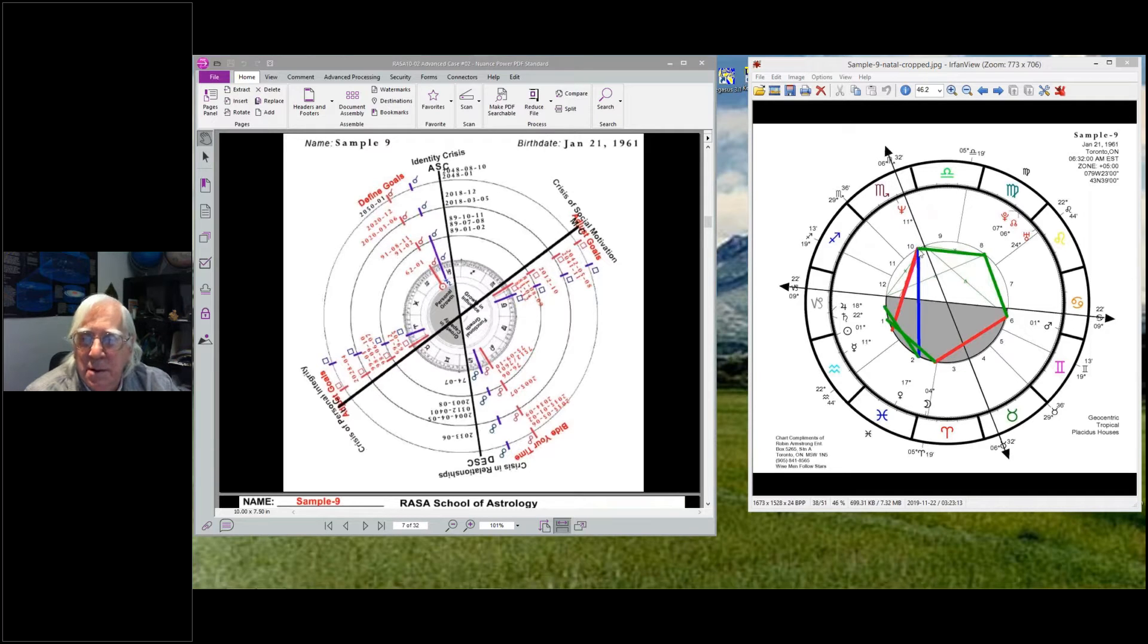This Mercury-Neptune could also be confusion related to parents and what's expected of her. But anyways, the Saturn comes down through the first quadrant, and at about eight, nine years old it's going to hit the IC.